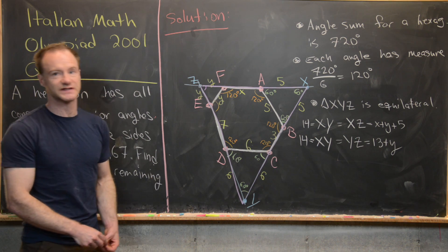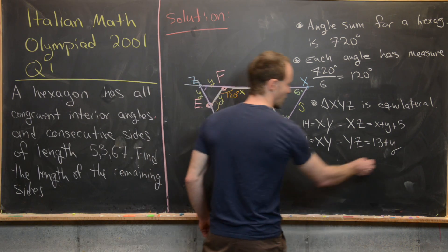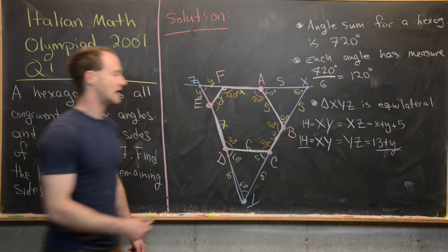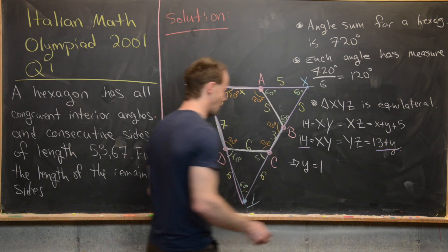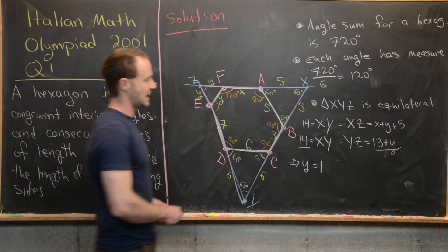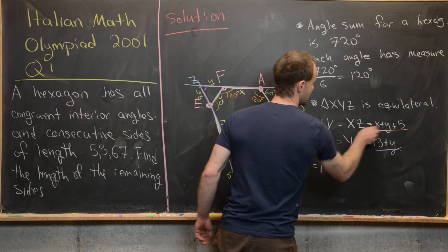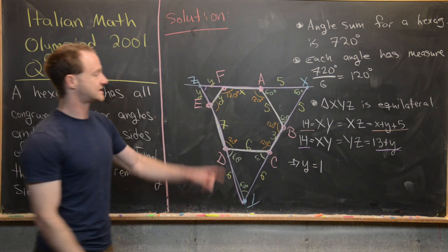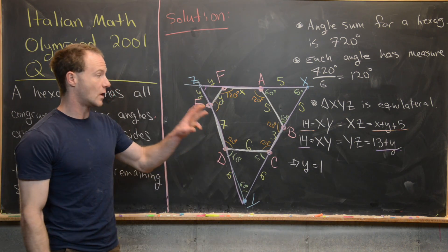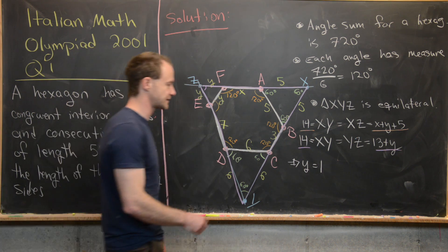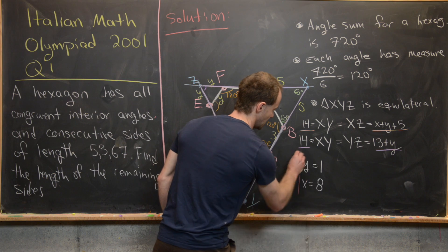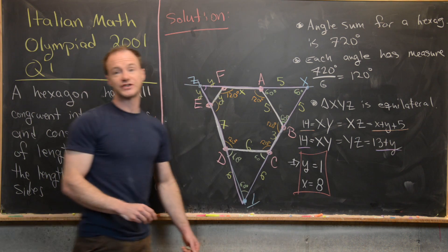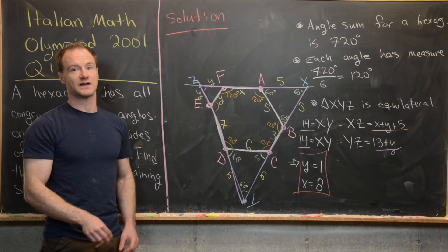Great. But now we've got two very simple equations that we can use to solve for x and y. So notice this one that I've underlined in purple tells us immediately that y is equal to 1. Good. And now this one that I'm underlining up here will tell us that x plus 1 plus 5, or x plus 6, equals 14, which is the same thing as x being equal to 8. And that finishes our problem.